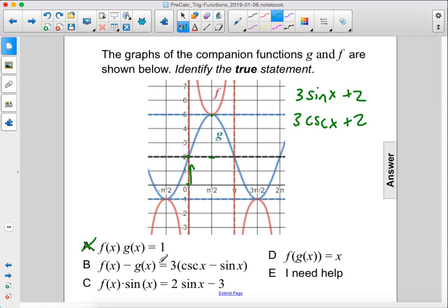So if we subtract them. So 3 cosecant x plus 2 minus g of x. So that would be 3 sine x and then minus 2, because we're subtracting the whole thing.